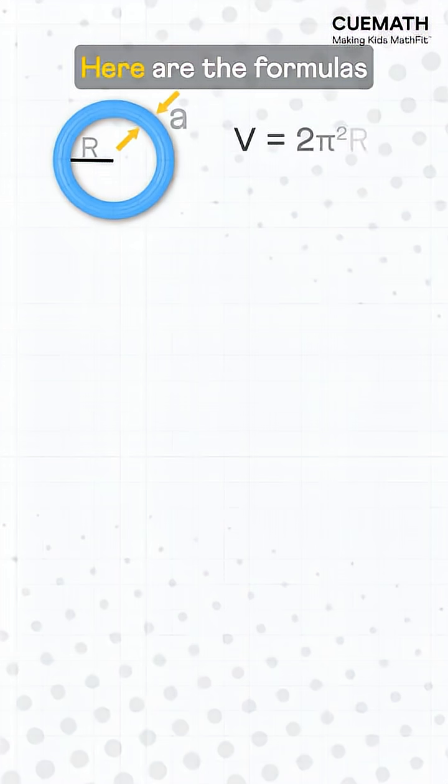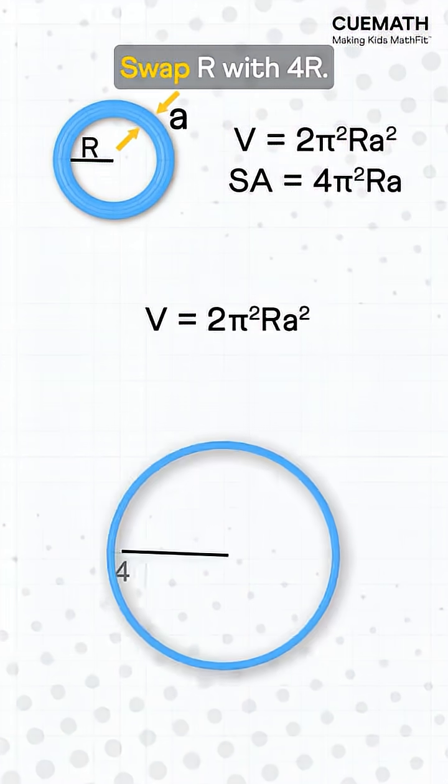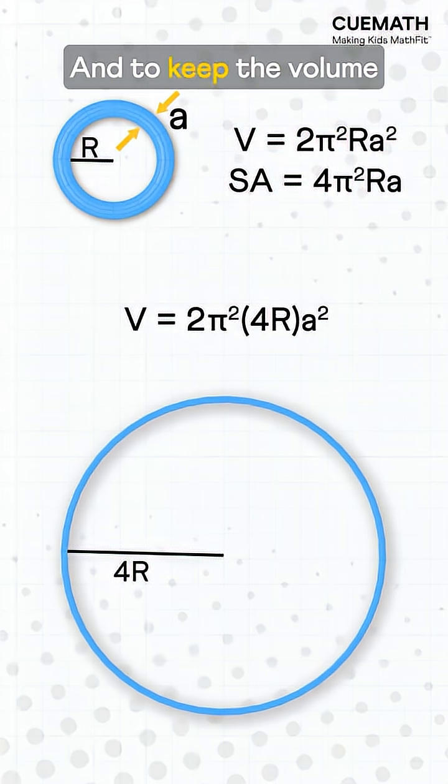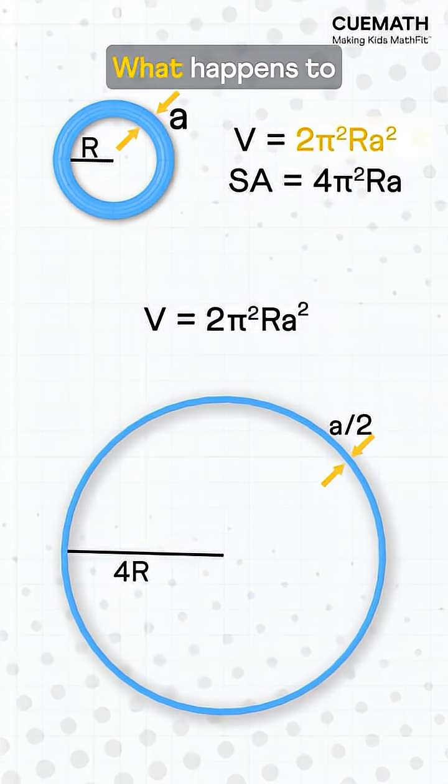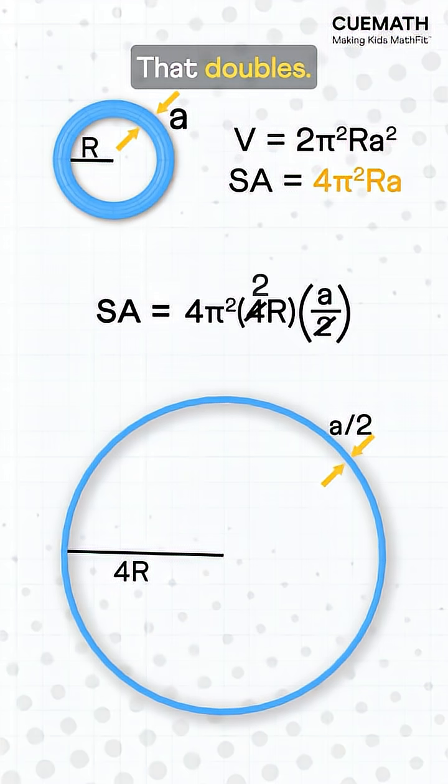Let's look at the exact math. Here are the formulas for the volume and surface area of the torus. Swap r with 4r, and to keep the volume the same, we must adjust a to a/2. What happens to the surface area? That doubles.